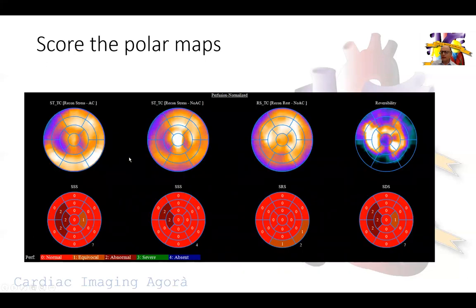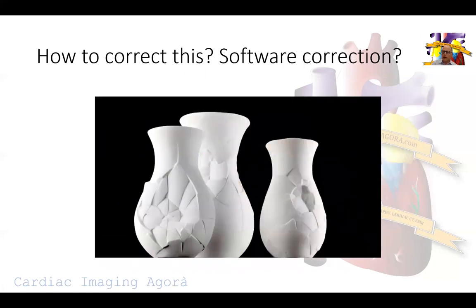Trying to read the study you can read it this way, but none of us would be comfortable reading the study in this fashion, given that it doesn't make sense from an anatomical standpoint and the fact that we saw motion artifact on the raw images. So is this a motion artifact, and how do we correct for it?